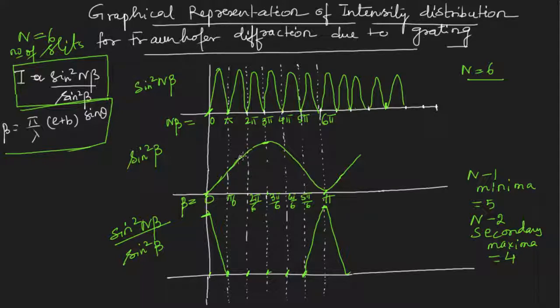Here my denominator is more. There will be some overlap. My numerator is divided by something, so it will be less than the primary maxima. For example, if I get like this.